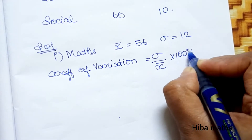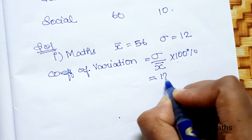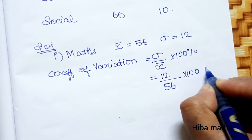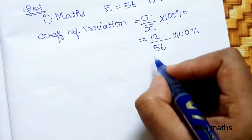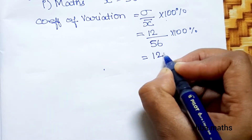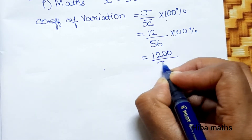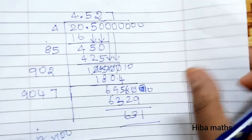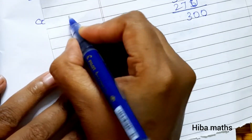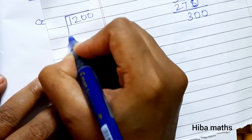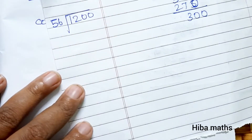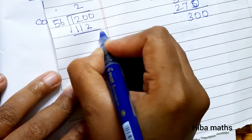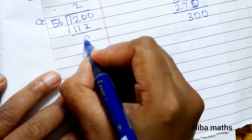For Mathematics: mean value is 56, standard deviation is 12. Coefficient of Variation equals standard deviation by mean into 100%, which is 12 divided by 56 into 100%, giving 1200 divided by 56. Performing the long division: 2 times 56 is 112, balance 80.